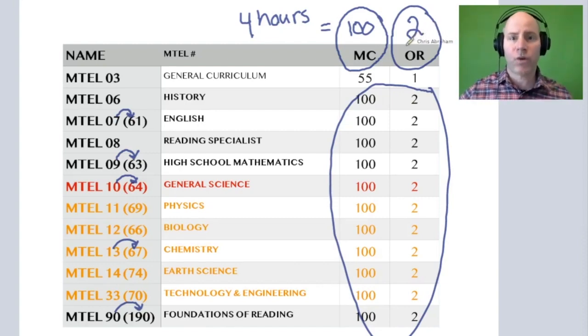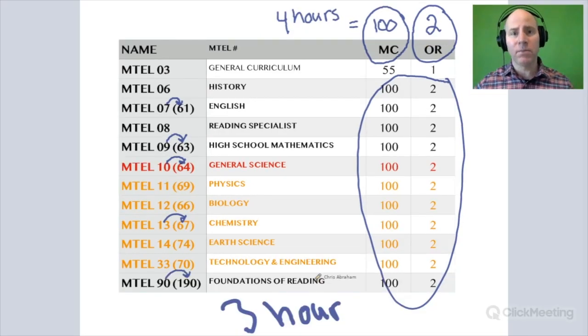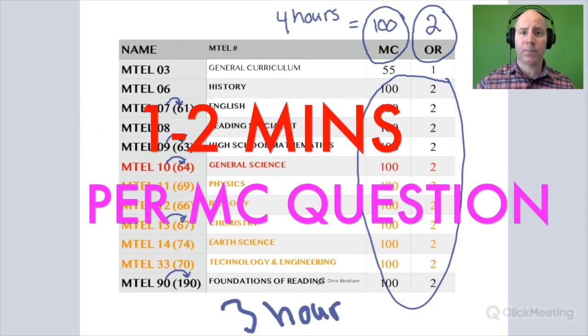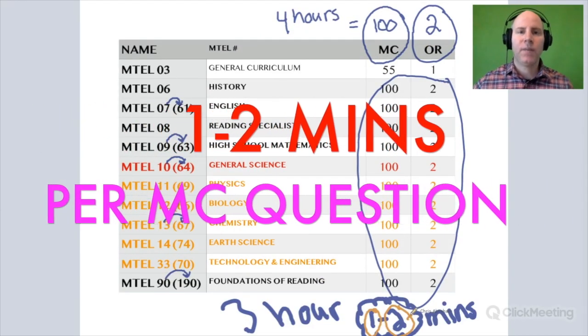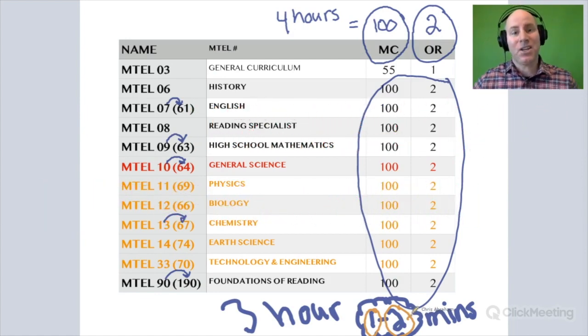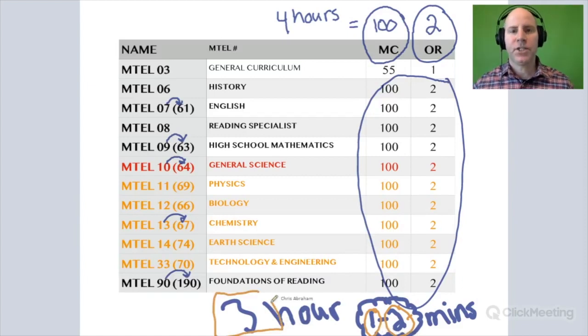And if you give yourself three hours on the multiple choice, then you'll be moving at a clip of one to two minutes per question. So there are going to be some questions that you're going to need a little bit more than two minutes to solve. And the only way you'll get that time, the only way you'll be able to fit in that little extra time for those harder questions, is if you're able to solve some of the questions in one minute or 90 seconds. In general though, you want to finish that multiple choice on these four hour exams in three hours.